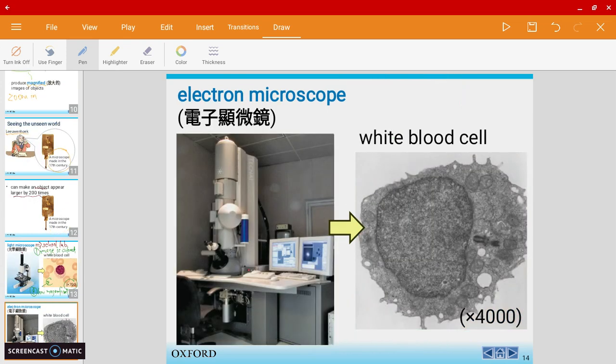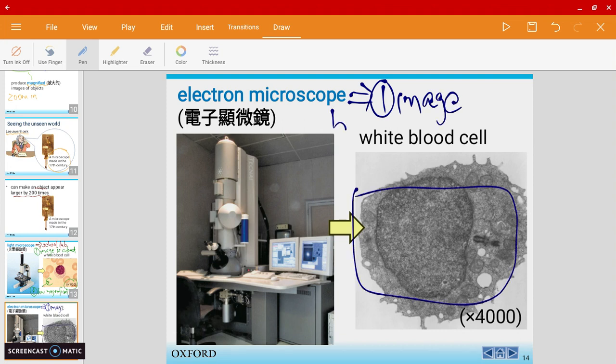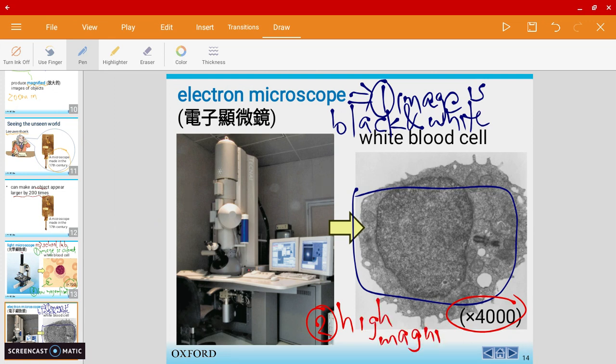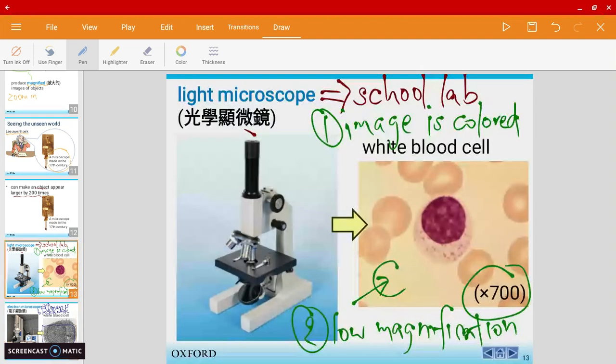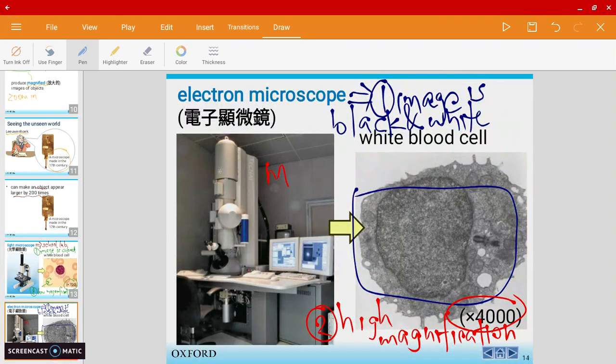Another common type is an electron microscope. This is usually found in big labs and big factories. The image, as you can see, is black and white. However, if you look at magnification, this picture is magnified by 4,000 times, meaning it has high magnification. When compared to the light microscope, the electron microscope is also more expensive. You can see in the picture it has a lot of machinery and is connected to computers.